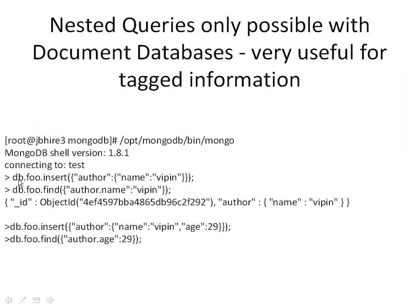Let's see an example. Basically I am inserting a row into db.foo — in the database I have a collection called foo in which I am inserting an author attribute. The name of the column is author, and author itself contains an attribute which is name, and the name is 'weapon'.